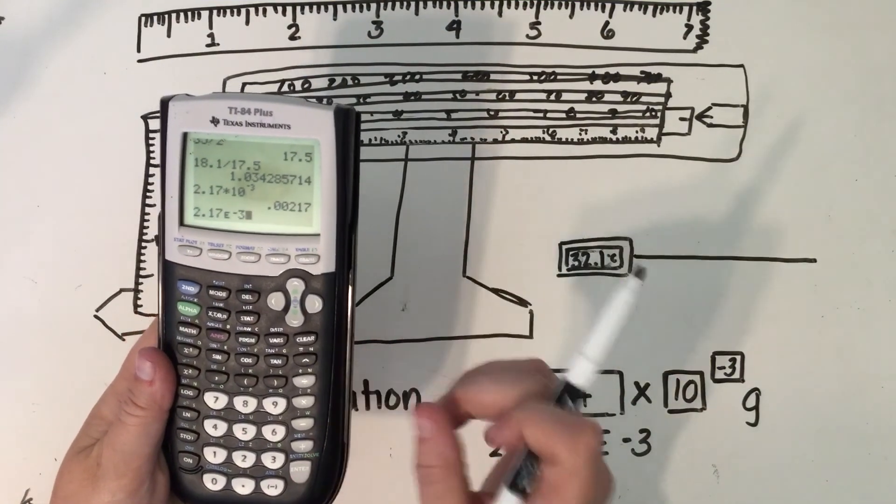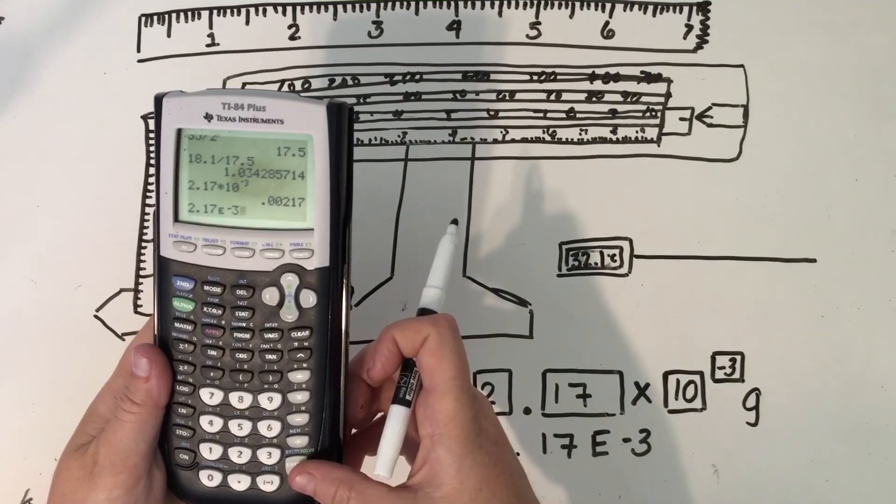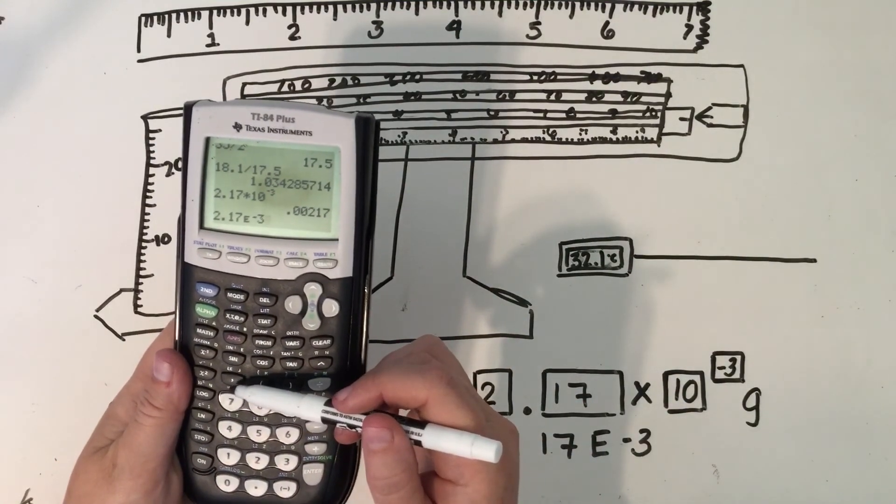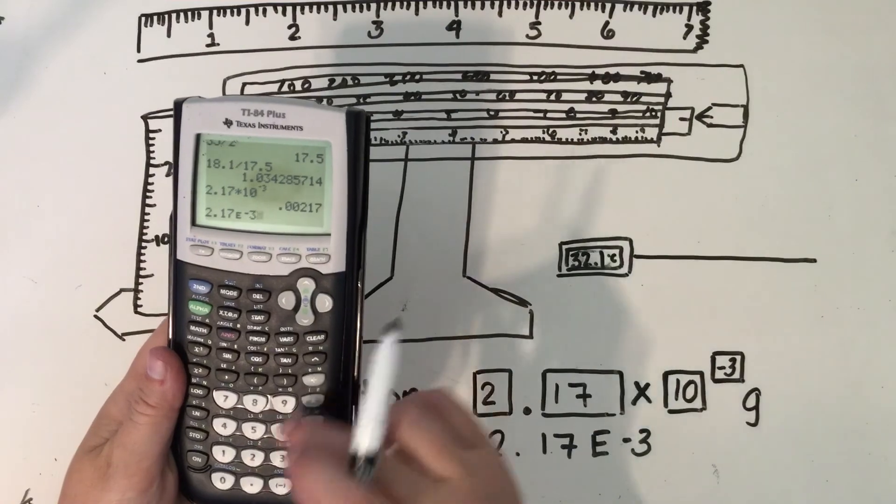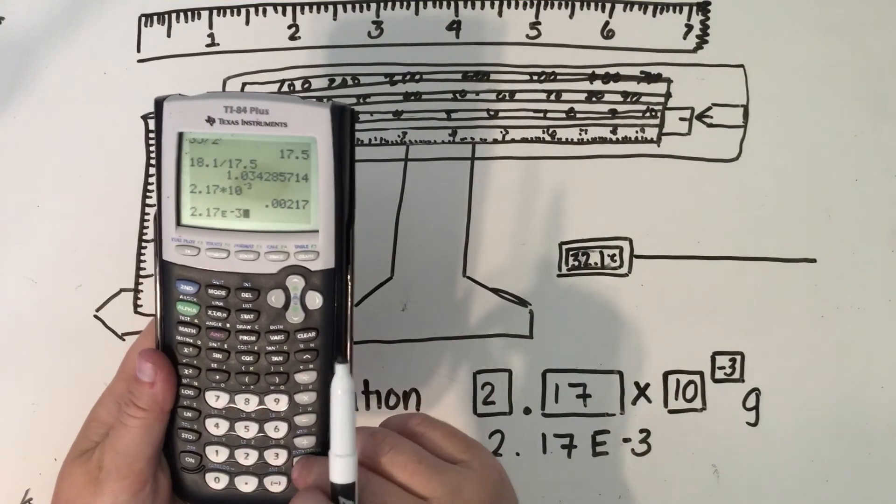One thing we're really going to try to get you in the habit of is using that 10 to the button or the E button instead of typing in times 10 carat.